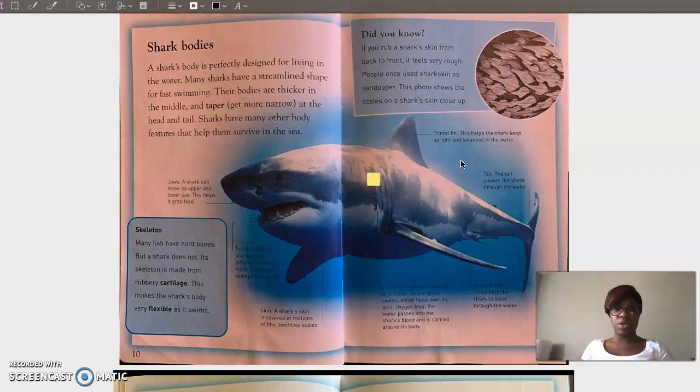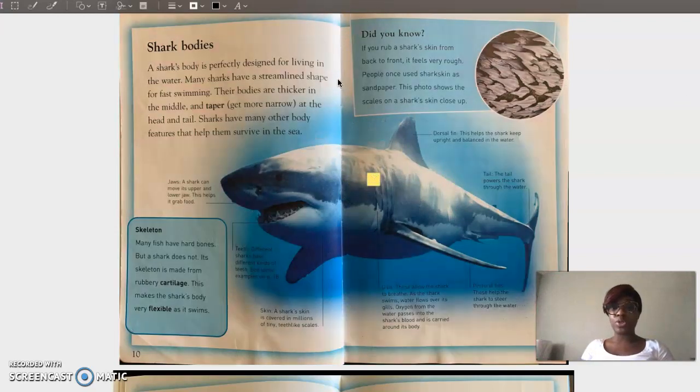Now, I'm not done reading. The author also included some information here. So she showed me a picture and next to that picture is a caption. Anytime you see a small picture, always read the paragraph of the words directly next to it. It will help you to learn more information. Did you know if you rub a shark's skin from back to front, it feels very rough? People once used shark skin as sandpaper. This photo shows the scales on a shark's skin close up. Wow. So I think I want to jot about that.